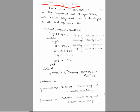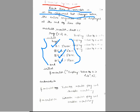What does $monitor do? Each time a variable in the argument list changes — take 'a' as the variable here — each time the value of 'a' changes, the entire argument list will be displayed at the end of the time step.